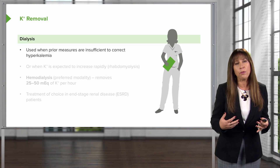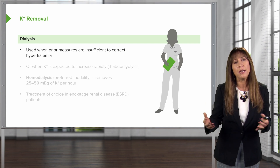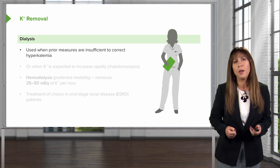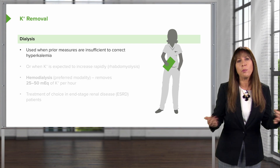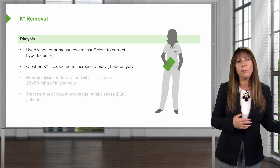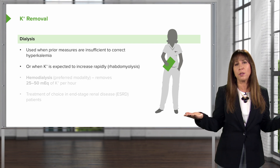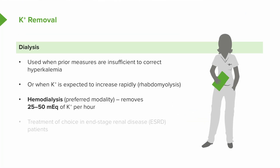When thinking about potassium removal, probably the most effective way to remove potassium urgently is through dialysis. This is warranted when prior measures are insufficient to correct the hyperkalemia, or when a massive increase in potassium release is expected — such as from rhabdomyolysis or tissue breakdown. Hemodialysis is the preferred modality, as it can remove up to 25 to 50 milliequivalents of potassium per hour, and is the treatment of choice in patients with end-stage renal disease.